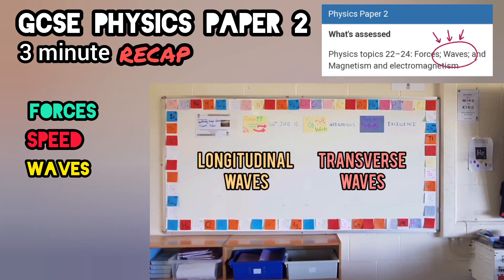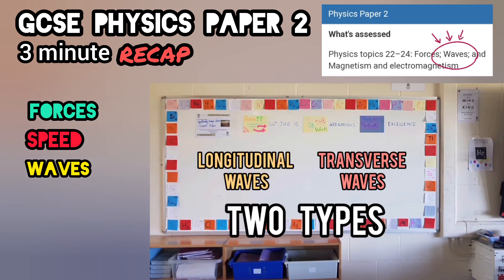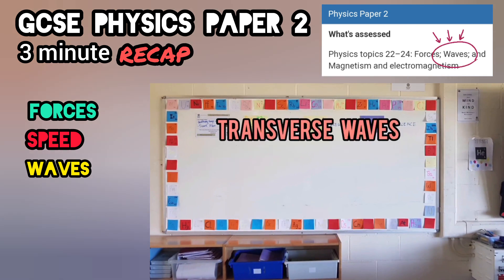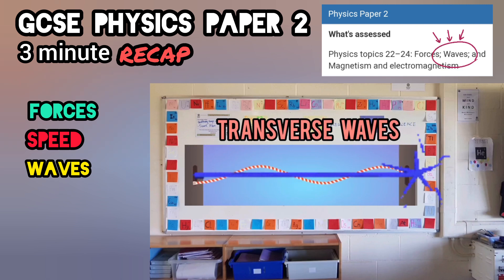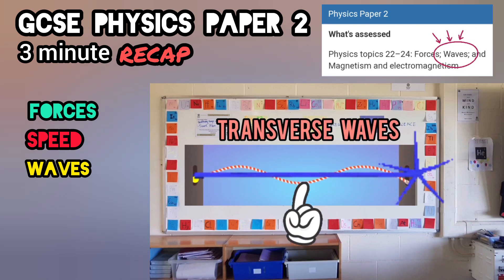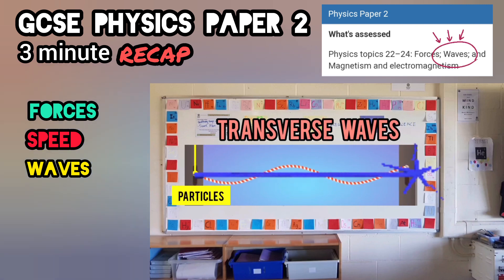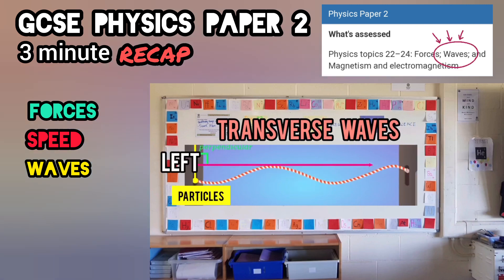Longitudinal and transverse waves — here are the two types. Let me start with transverse waves. Here's visible light: the wave moves at right angles. Two atoms on this blue line, particles move up and down, and the wave goes left to right.